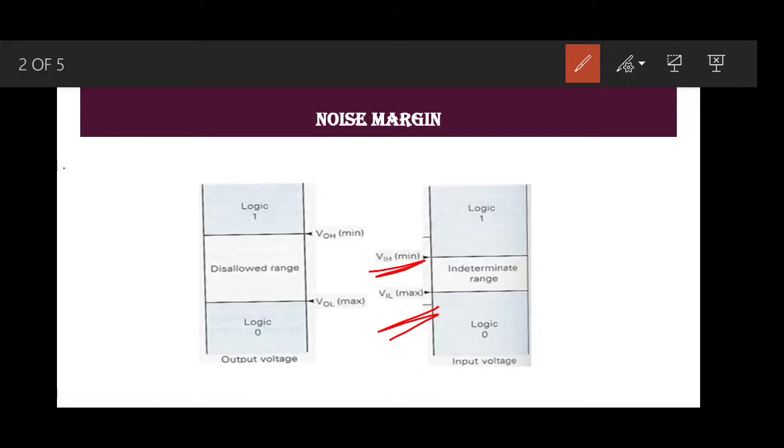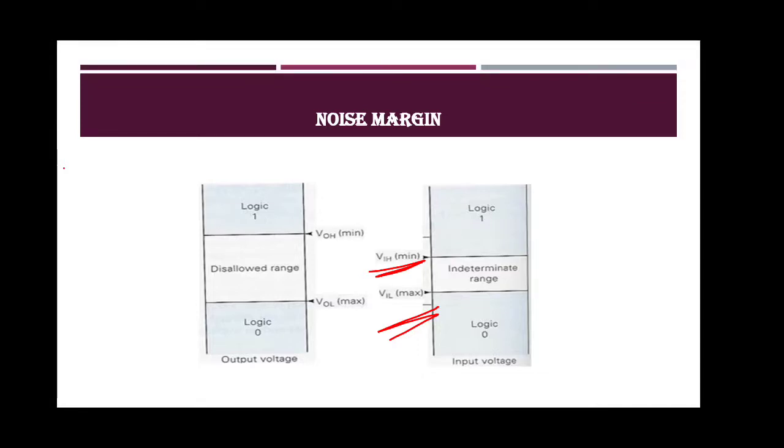The circuit's ability to tolerate noise signals is referred to as noise immunity, the quantity measure of which is called noise margin.